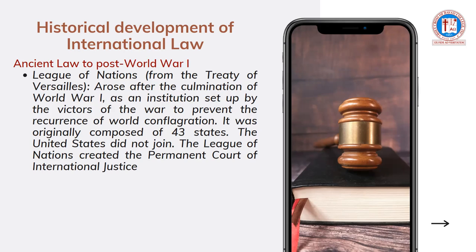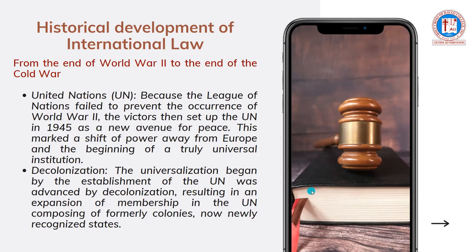Cases in the International Court of Justice deal with maritime disputes, maritime conflicts, and state-to-state controversies. In contrast, the ICC caters cases involving crimes committed by individuals — they prosecute individuals — while in the ICJ, the parties are states. After the First World War, the establishment of the League of Nations failed to prevent the Second World War. The victors then set up the UN in 1945 as a new avenue for peace, marking a shift of power away from Europe and the beginning of a truly universal institution.